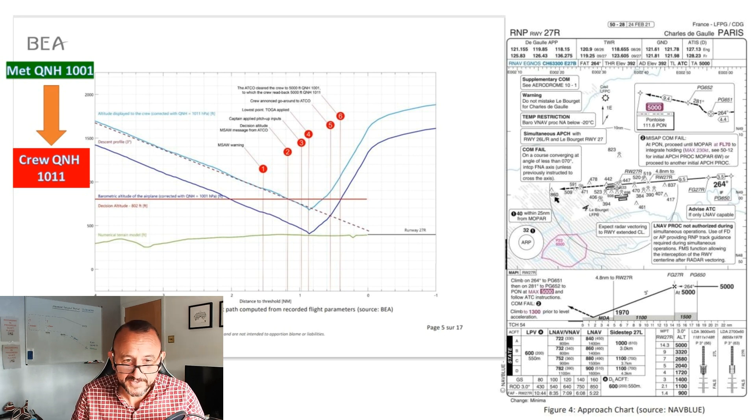You just need to visualize where 1001 is and where 1011 is - being sort of below ground, if you like, of a higher pressure setting. That means that the altimeter is obviously going to over-read.